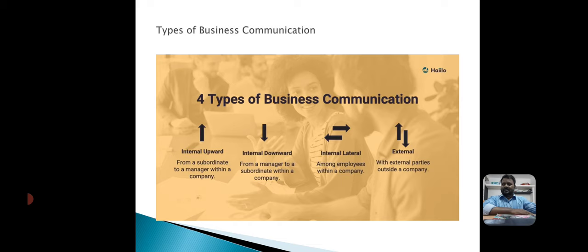It may also ask for feedback such as a summary of problems or successes that management would like to track. The second type is internal downward communication — any communication from a superior to one or more subordinates, which might be in the form of a letter, a memo, or a verbal directive. Leaders should keep communication professional and clear.